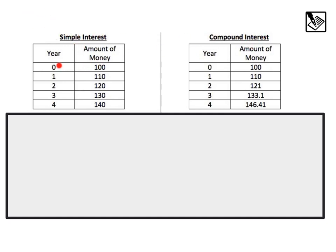Notice simple interest: at year 0 we start with 100, and it looks like we're adding 10 each time — 110, 120, 130, 140. Very simple and straightforward. However, in compound interest, at year 0 we have 100, then 110, which is the same, but now we end up at 121 instead of 120, and 133.1 instead of 130. Compound interest is actually growing a little bit faster than simple interest.